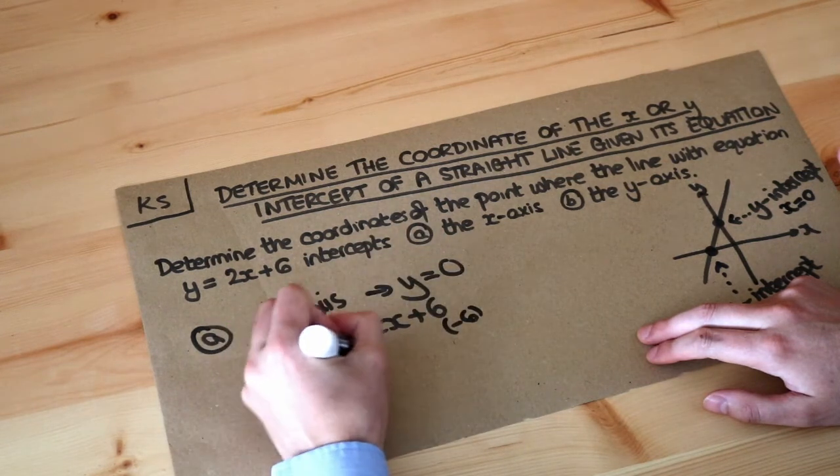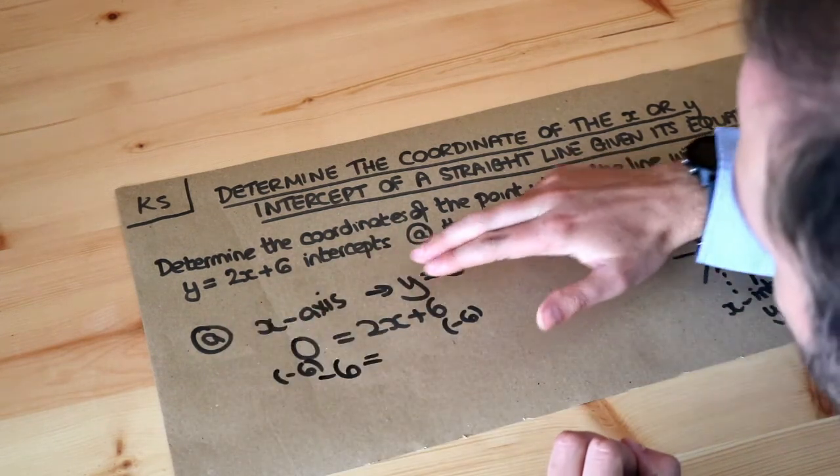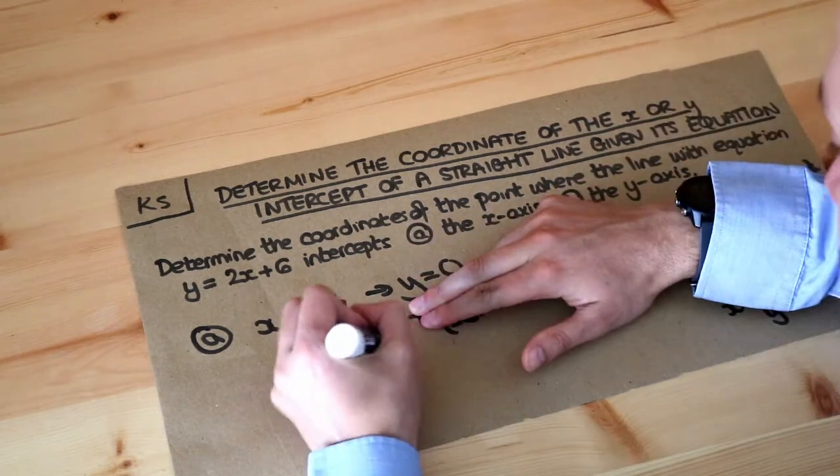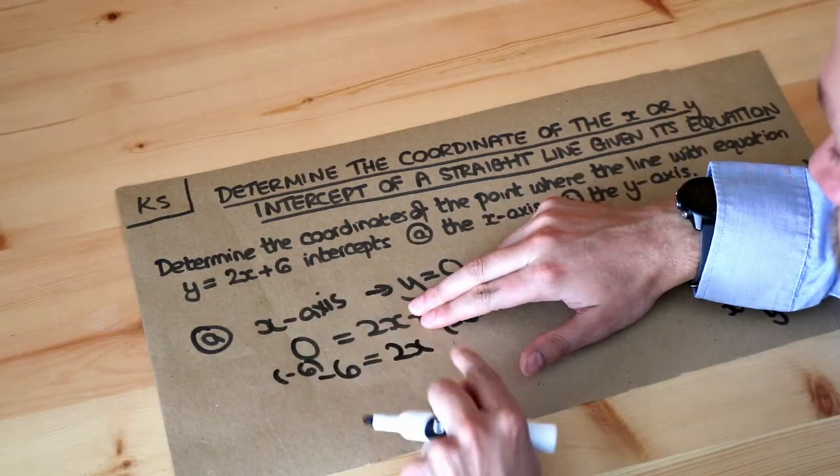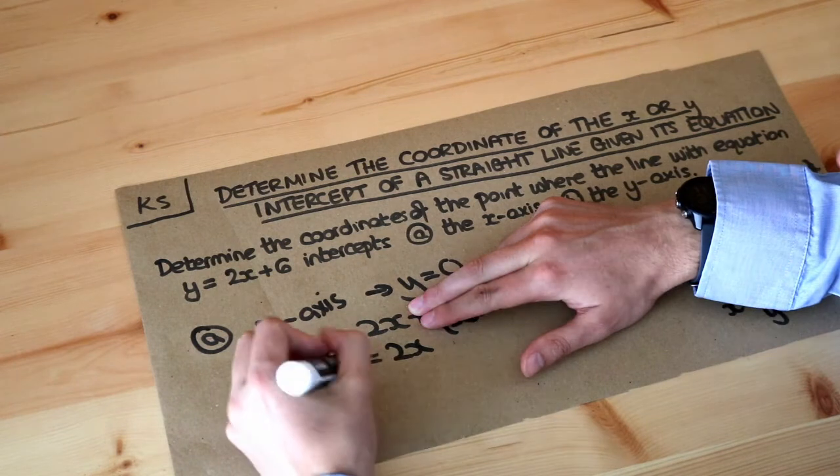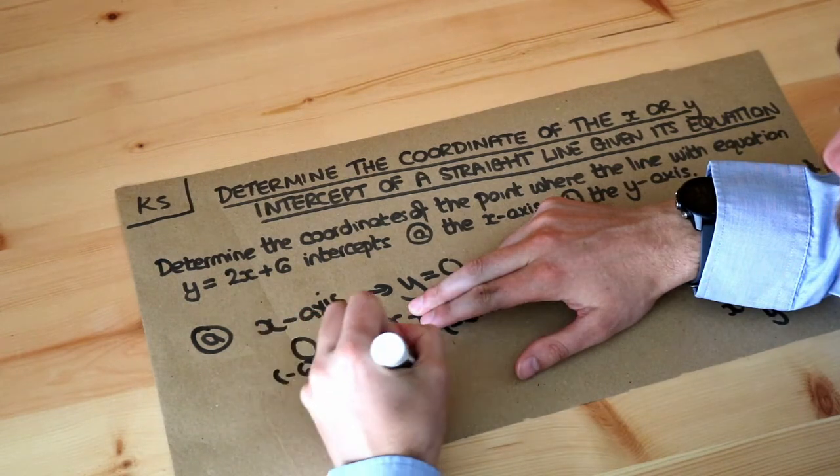So zero minus 6 is minus 6. Subtracting 6 here gets rid of the plus 6 leaving 2x. Then we divide both sides by 2 to get rid of that 2 there. So we get minus 3 equals x.